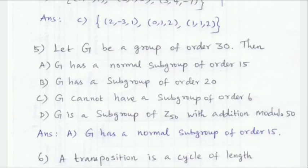Let G be a group of order 30. This is Lagrange's theorem: let G be a group, H be a subgroup of G. The order of H is a divisor of the order of G. So option A — a divisor of G — applies. Option A: G has a normal subgroup of order 15.